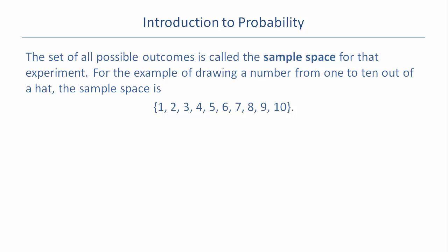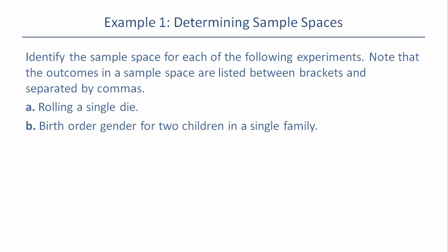The sample space of flipping a coin would be H and T for heads and tails. If you're drawing a number out of a hat with numbers one through ten, you have one through ten. The outcomes in the sample space are listed between brackets and separated by commas, and we don't list outcomes twice.